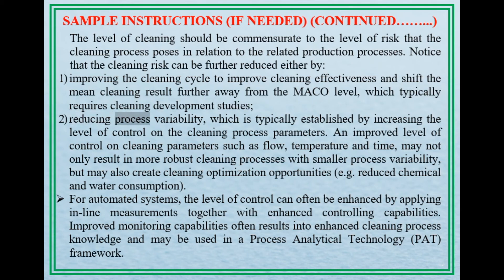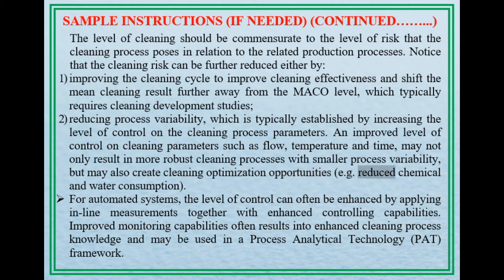Reducing process variability is typically established by increasing the level of control on the cleaning process parameters. An improved level of control on cleaning parameters such as flow, temperature, and time may not only result in more robust cleaning processes with smaller process variability, but may also create cleaning optimization opportunities — for example, reduced chemical and water consumption.